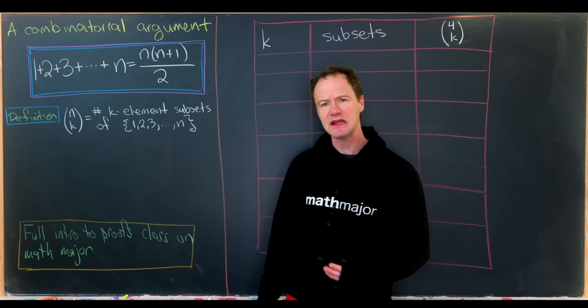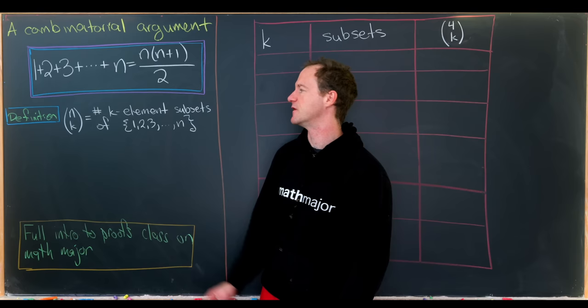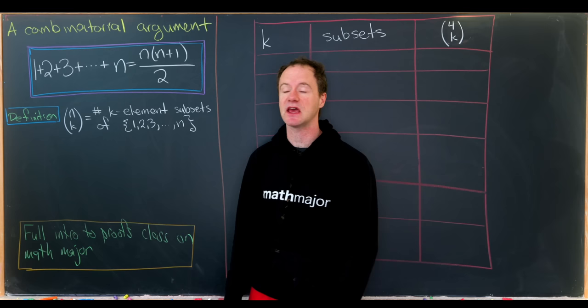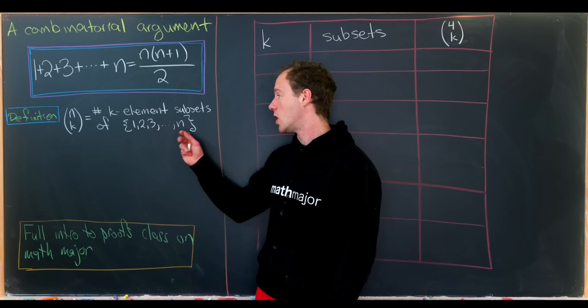The set need not contain exactly these n elements — it can really contain any n elements — but we'll stick with these just to keep it simplest. There are a number of different definitions of the binomial coefficient n choose k, but if n and k are natural numbers, they're all equivalent to this definition.